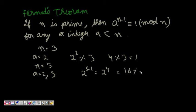2 to the power of 5 minus 1 which is 2 to the power of 4, so 16 percentage 5 is equal to 1. Similarly, if I take 3, 3 to the power of 5 minus 1 is equal to 3 to the power of 4, 81 percentage 5 is equal to 1. So we see that this theorem is true and this is Fermat's theorem by great mathematician Fermat.